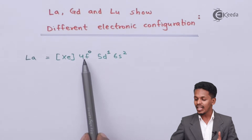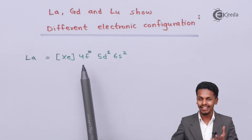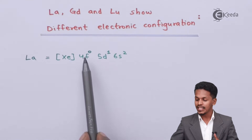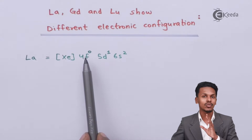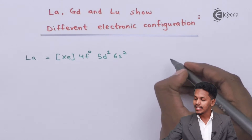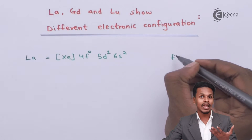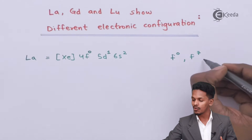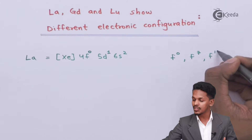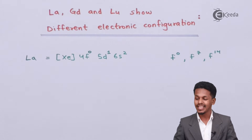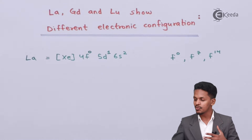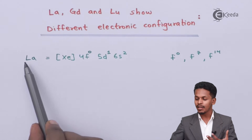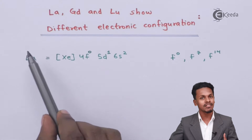The reason behind that is the 4f and the 5d orbitals have almost the same energy level, and that is why the electron can be shifted from 4f to 5d. The 4f orbital has no electrons on it. We also understand that the 4f orbital is most stable when it consists of 0 electrons, 7 electrons (half-filled), or 14 electrons (completely filled). So lanthanum is already stable on the basis of its electronic configuration.